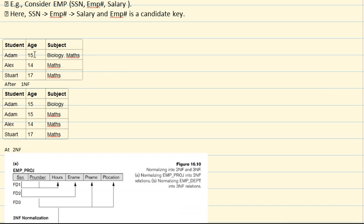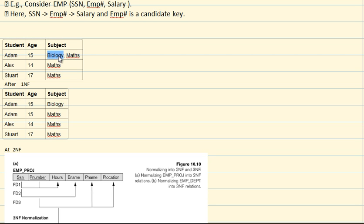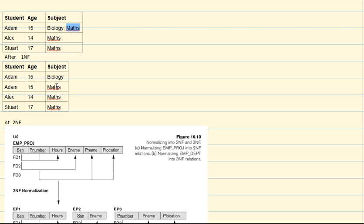Let's look at some examples. 1NF allows only atomic attributes. As you can see in the first row, 'biology' and 'math' are two values in one column of a table — this is not allowed according to the 1NF rule. So we separate them out: Adam, age 15, will be written twice but with each subject separated. This is how you apply 1NF normalization.